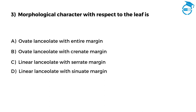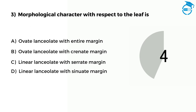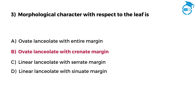The next question is: Morphological character with respect to the leaf is: Option A, ovate lanceolate with entire margin. Option B, ovate lanceolate with grenade margin. Option C, linear lanceolate with serrate margin. Option D, linear lanceolate with sinuate margin. The right option is B, that is ovate lanceolate with grenade margin.